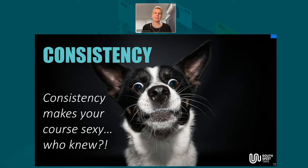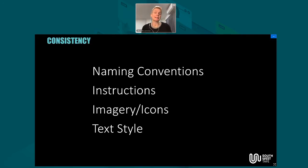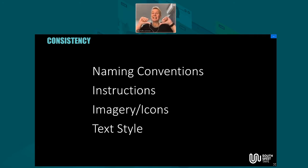The top tip — and it doesn't sound very sexy — is consistency. We're not talking about same-same or creating boredom, but you want your learner to focus on what they're learning rather than figuring out where to find things. Simple ways to create consistency include thinking about what you're going to call each part of your Moodle course — section names and the names of your activities and resources. Don't leave learners guessing. If you're consistent in how you name things, it's going to be intuitive. Note: if you're having to put too many instructions in, it probably means your course design isn't that great.